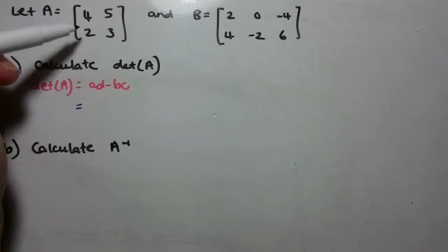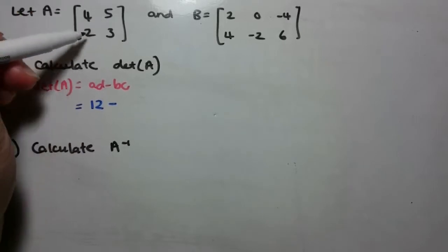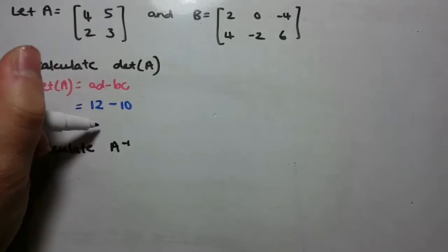So what we've got here is A times D, 4 times 3 is 12, take away BC, 5 times 2, 10, and we get 2.